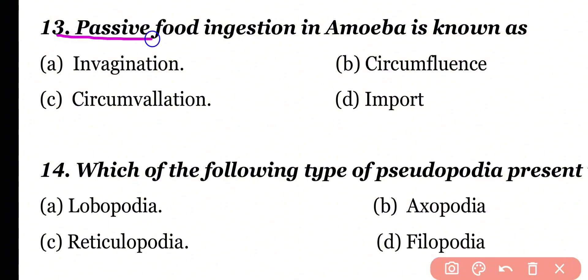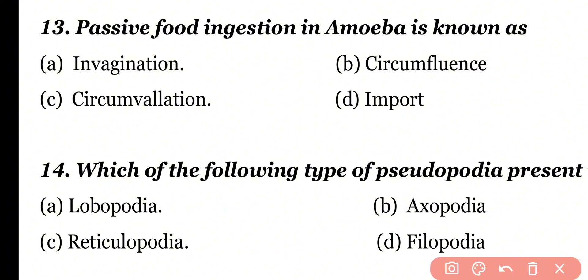Question number 13: Passive food ingestion in Amoeba is known as — invagination, circumfluence, circumvallation, or import? Correct answer is option D. Passive food ingestion in Amoeba is known as import.